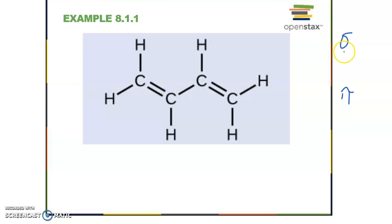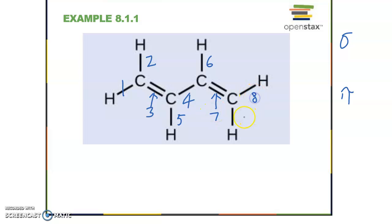Remember, every single bond is a sigma bond. When you see a double bond, one of them will be sigma and the other will be pi. Let's count sigma bonds in this molecule: one, two — and for the double bond, one of them is sigma — three, four, five, six, seven, eight, nine sigma bonds total. For pi bonds, counting the double bonds gives two pi bonds.